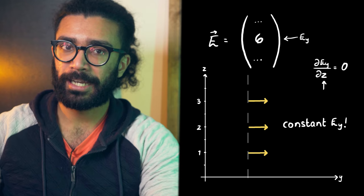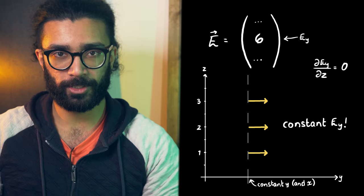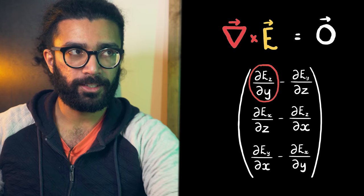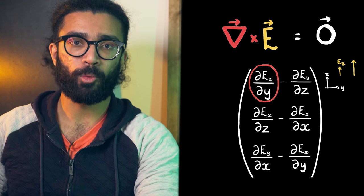All this derivative is doing is checking how this particular component depends on this particular variable. And because we have partial derivatives, once again, this means that we check this at constant values of whatever the other two coordinates are, in this case x and y. In other words, we just check the dependence on z and on nothing else. Similarly, this dEz by dy is checking how the z component of the field changes as we move along y, and so on and so forth.